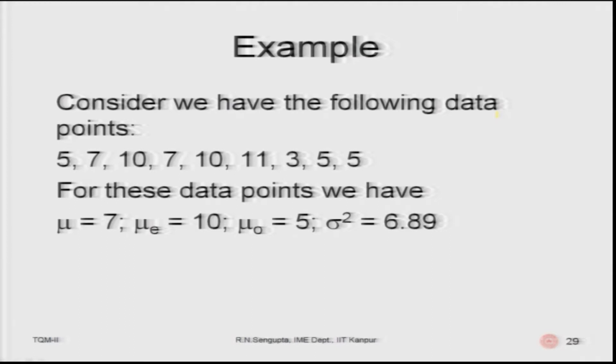Consider the following data points: 5, 7, 10, 7, 10, 11, 3, 5, 5. From these, mu equals 7, the median mu_e equals 10, the mode mu_0 equals 5. Based on that, sigma squared comes out to be 6.89.